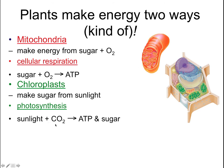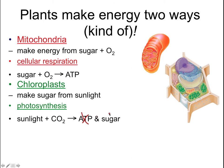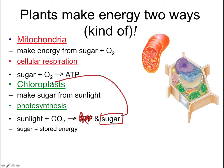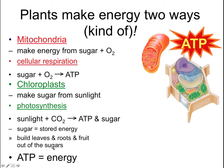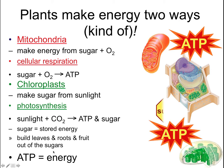Plants can do everything on their own. That process is photosynthesis, where you take sunlight and carbon dioxide to make sugar — the sugar is the stored energy. That's the same sugar that goes into cellular respiration to make ATP. So the energy builds in the leaves, roots, and fruit out of the sugars, and the ATP is the usable energy.